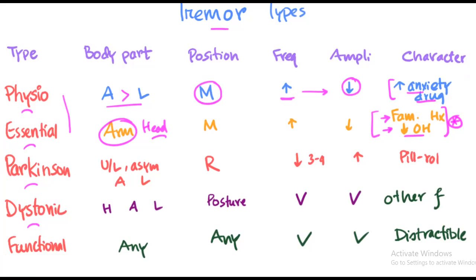In Parkinsonism, the tremor is usually unilateral and asymmetrical, involving one limb in the initial stages, and arms are more involved than the legs. Compared to the physiologic and essential tremor, which occur in movement, Parkinsonian tremor usually occurs at wrist.